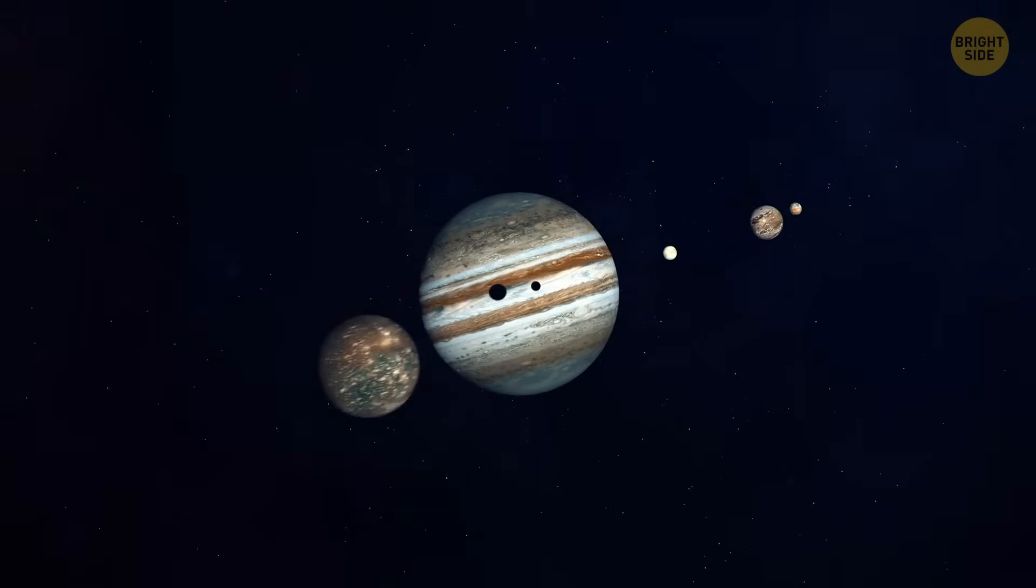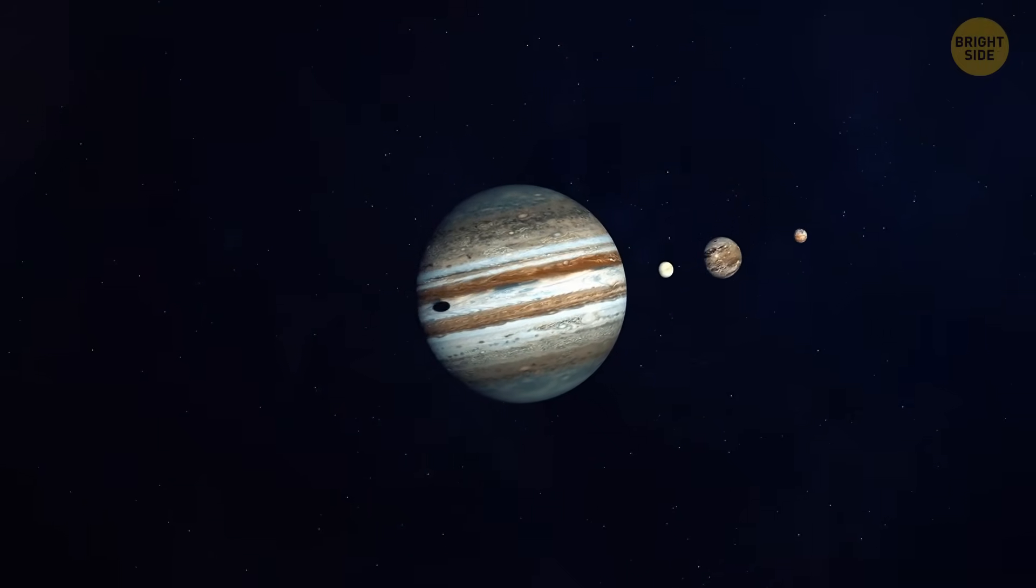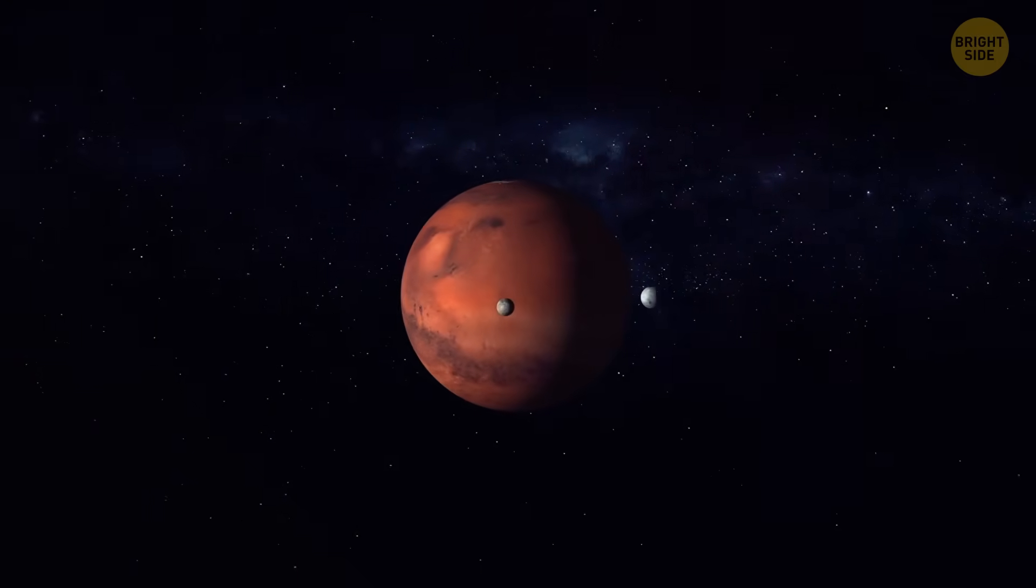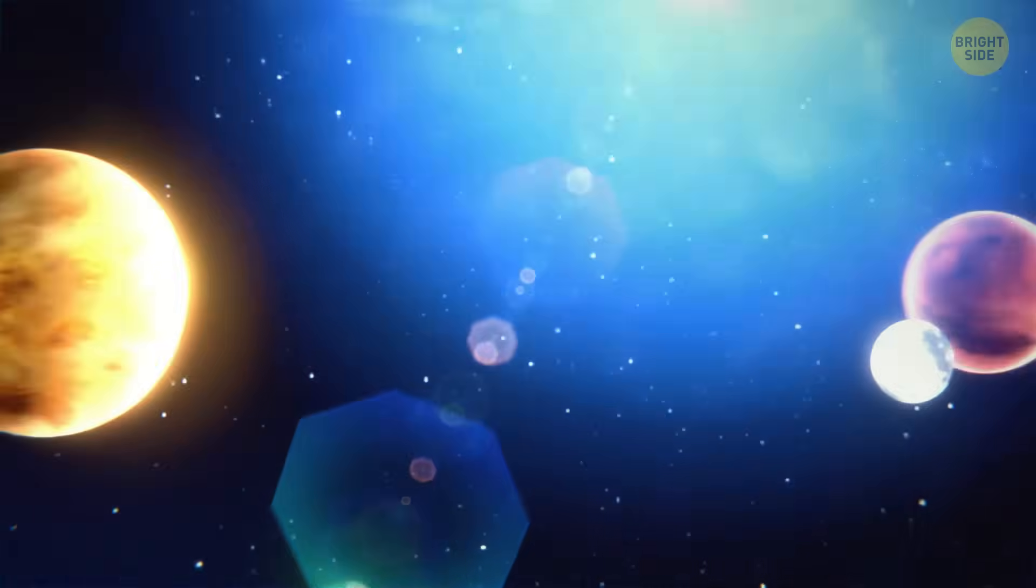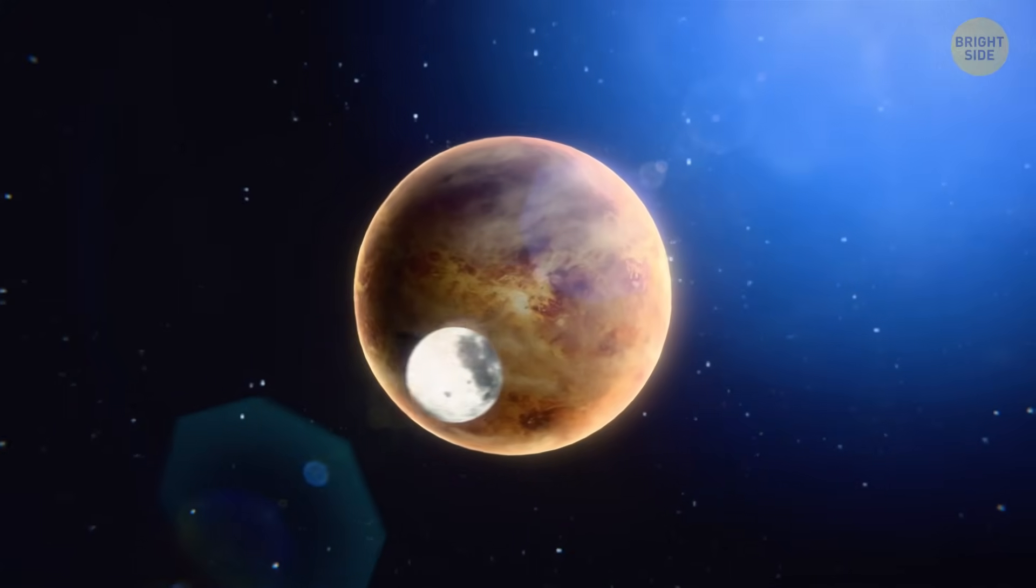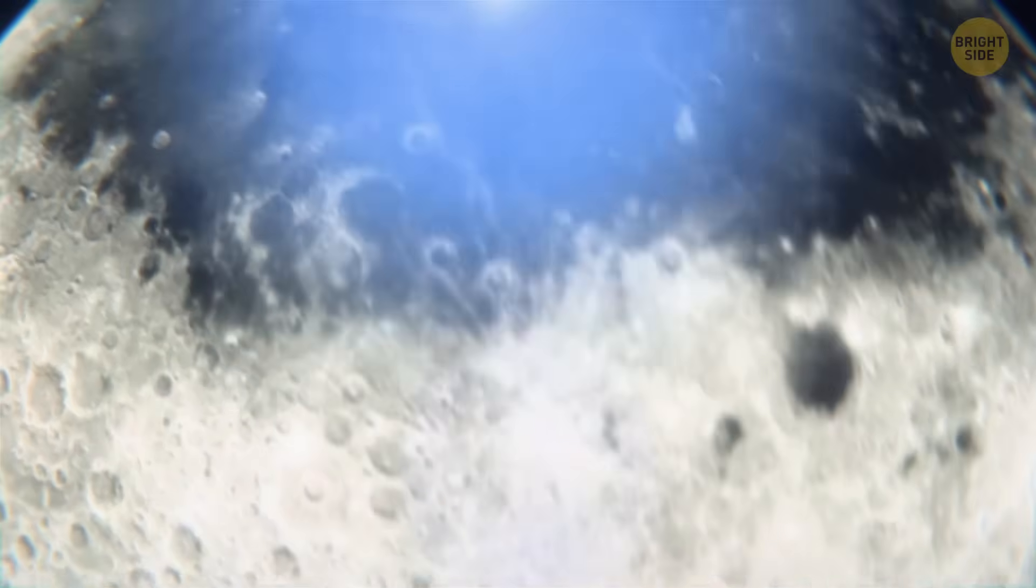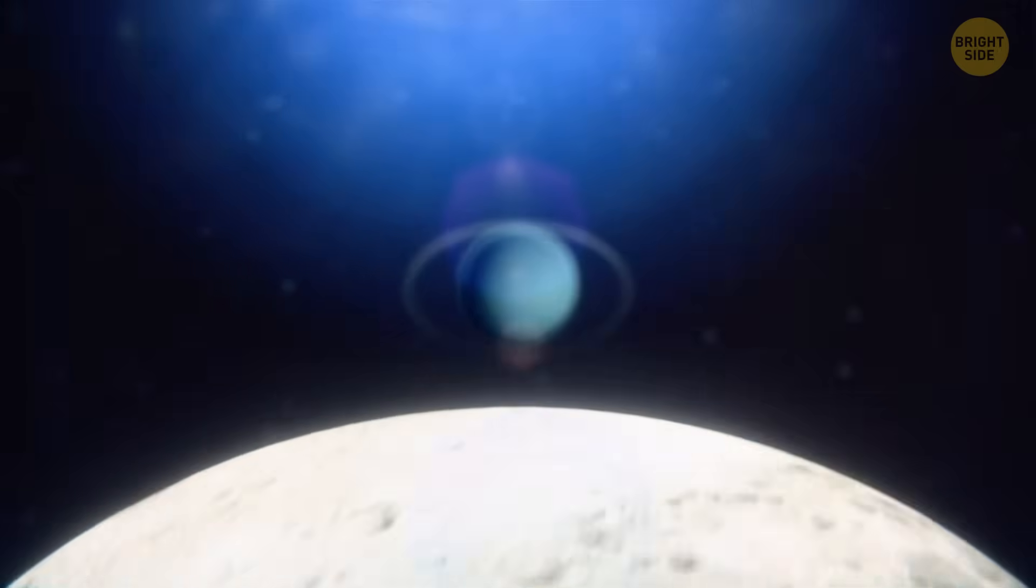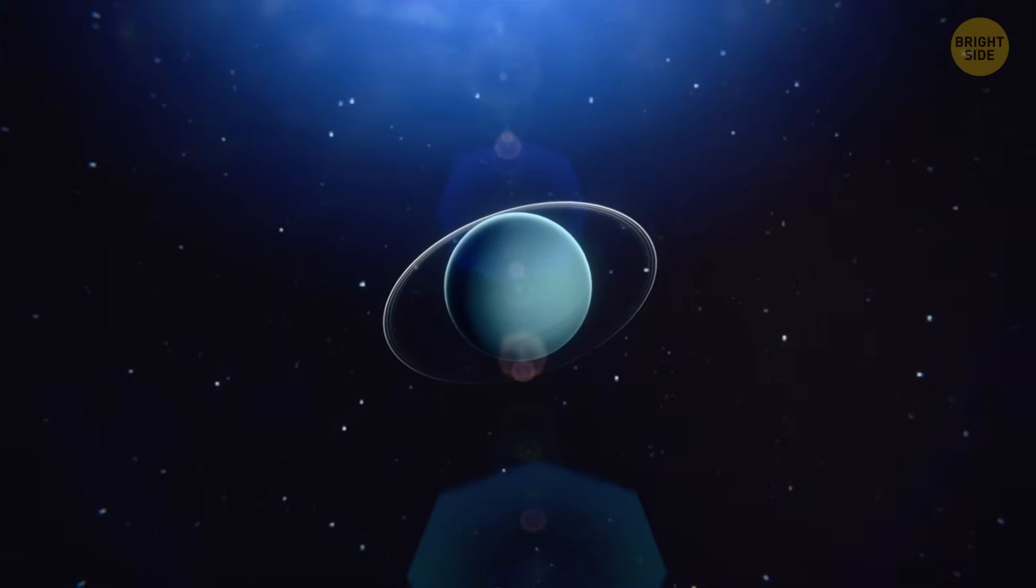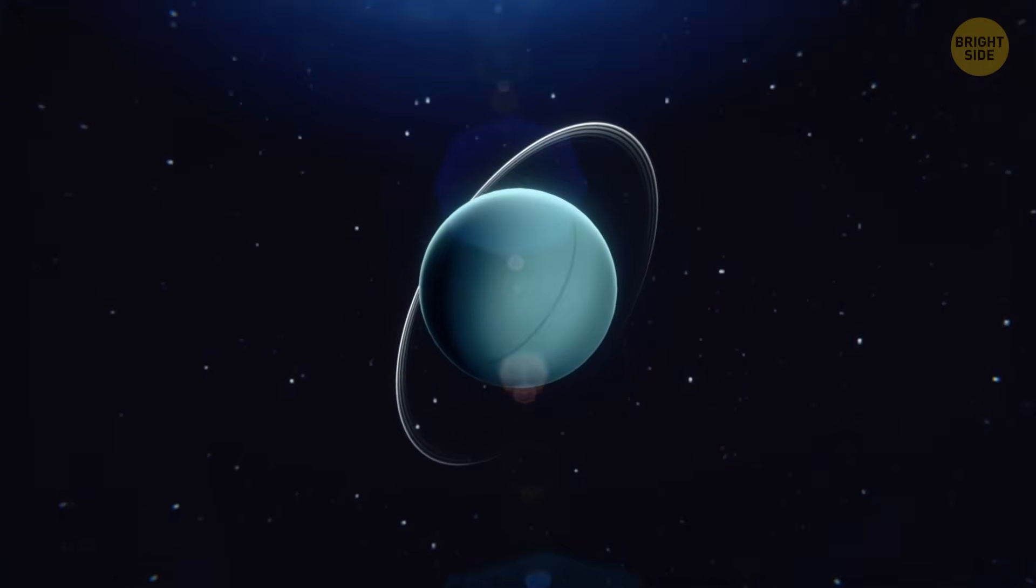Each giant planet had a collection of moons, but they were constantly getting shuffled around during all this migration madness. Some planets lost moons, while others gained new ones. Uranus could have been born with a massive moon or quickly captured one. And if that moon was big enough, it could have started playing games with Uranus' spin.